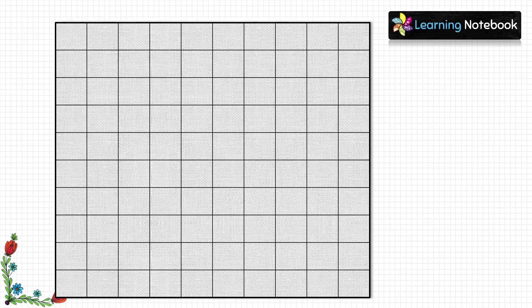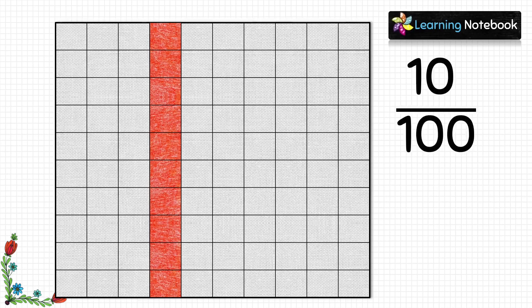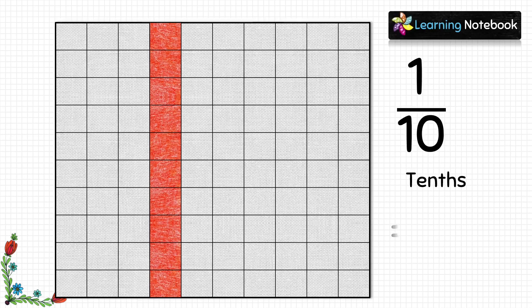Now let's color any one column of this grid — that means we will color 10 squares. The fraction of this colored column is 10 out of 100 squares, which is 10/100 or 1/10, written as 0.1 in decimal. So each column, each row, or any 10 colored squares of this grid represent 1/10 or 0.1.